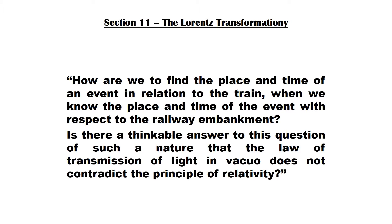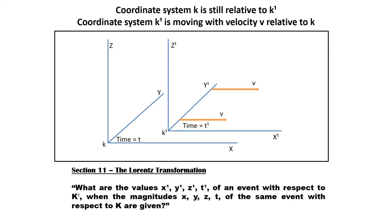The question is: how are we to find the place and time of an event in relation to the train when we know the place and time of the event with respect to the railway embankment? He turns this into a more general question regarding two coordinate systems — one still, the other in motion. If coordinate system K represents the embankment and K1 represents the train, Einstein asks: what are the values x1, y1, z1, t1 of an event with respect to K1 when the magnitudes x, y, z, t of the same event with respect to K are given?